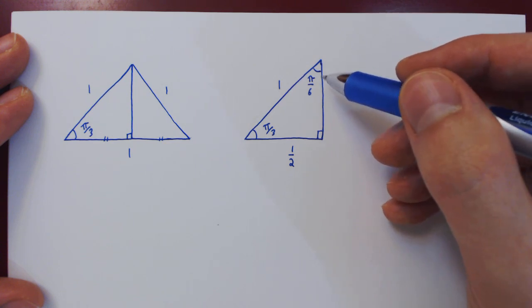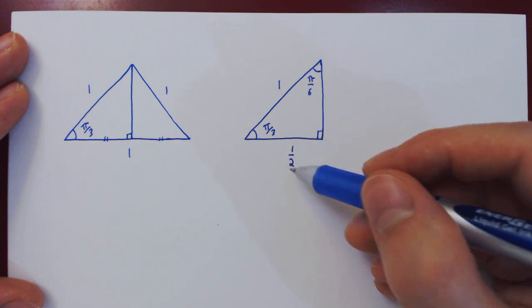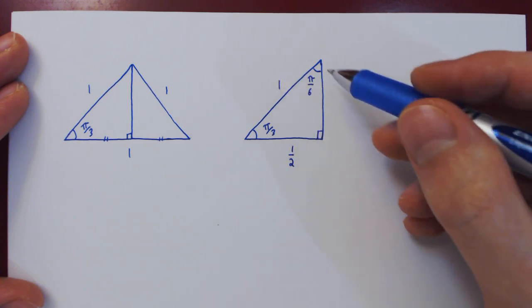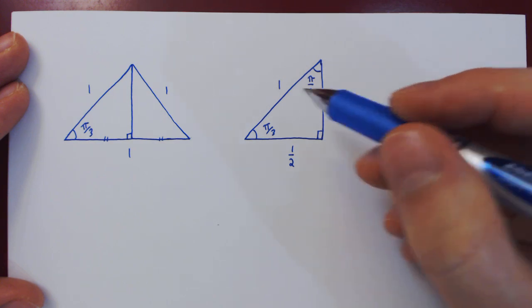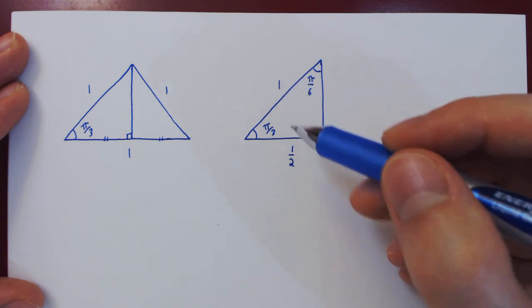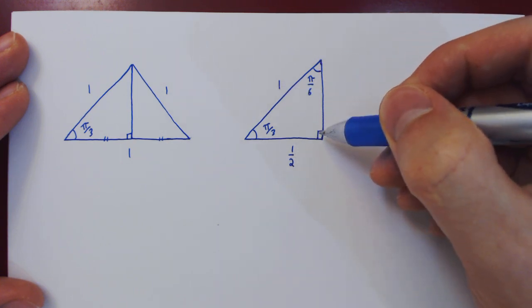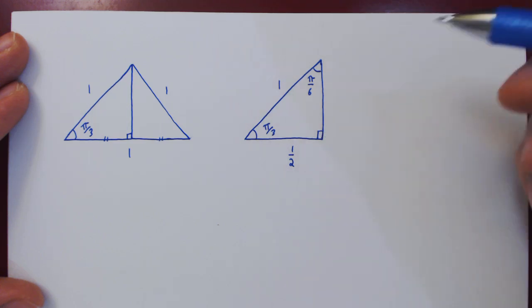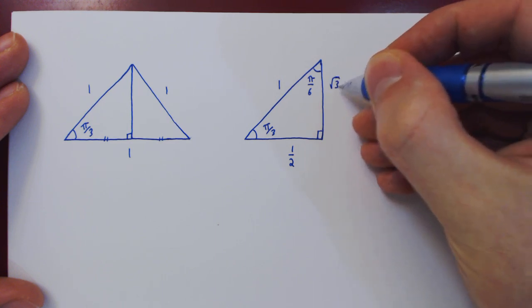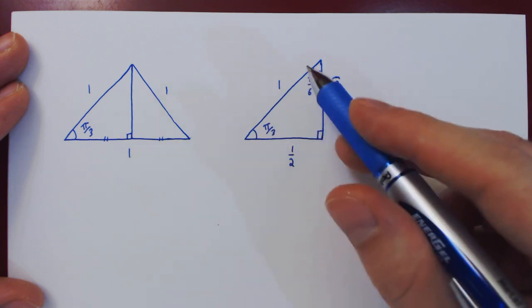We can now find the height of our triangle using Pythagoras' theorem. This squared plus this squared must equal 1. So the length of this side squared is 1 minus 1/2 squared, which is 1/4. So 1 minus 1/4 is 3/4. So this side squared is 3/4. So this side is the root of 3/4, which is √3 over 2. So we now have all three sides of our triangle.